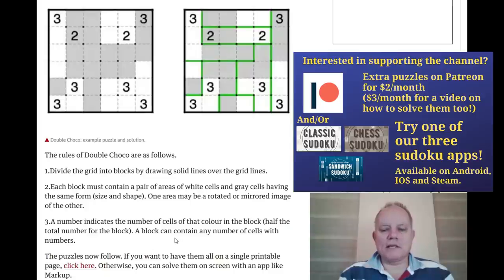A block can contain any number of cells with numbers in. So that three indicates that there are three white cells and three grey cells. So I haven't seen this sort of puzzle before.